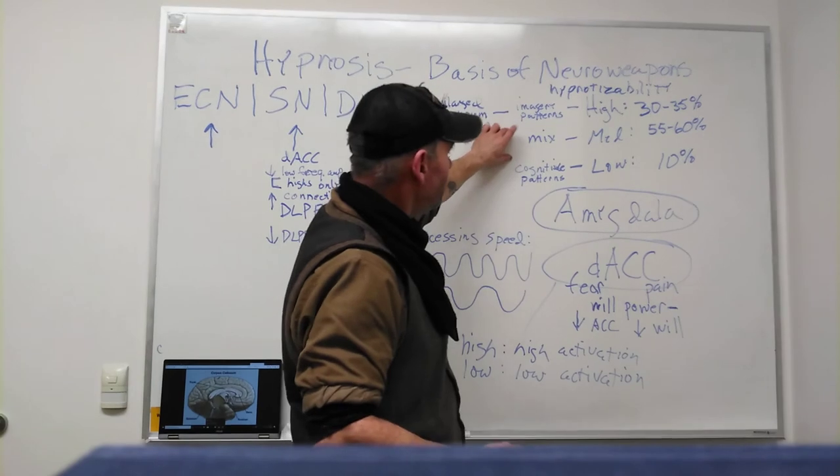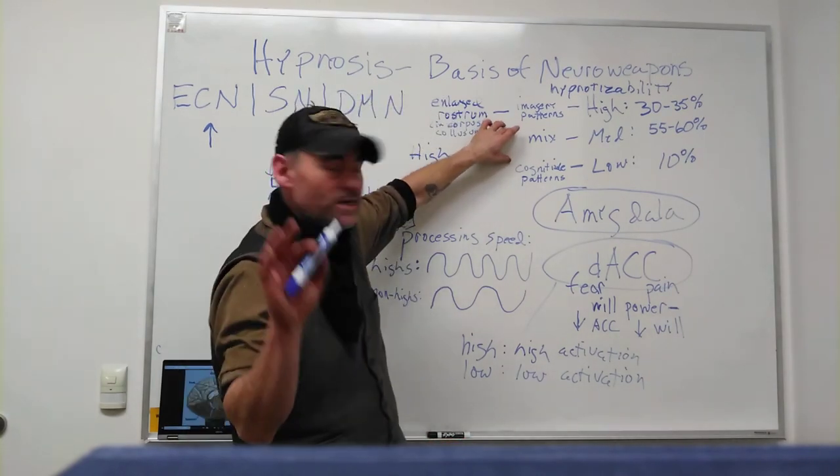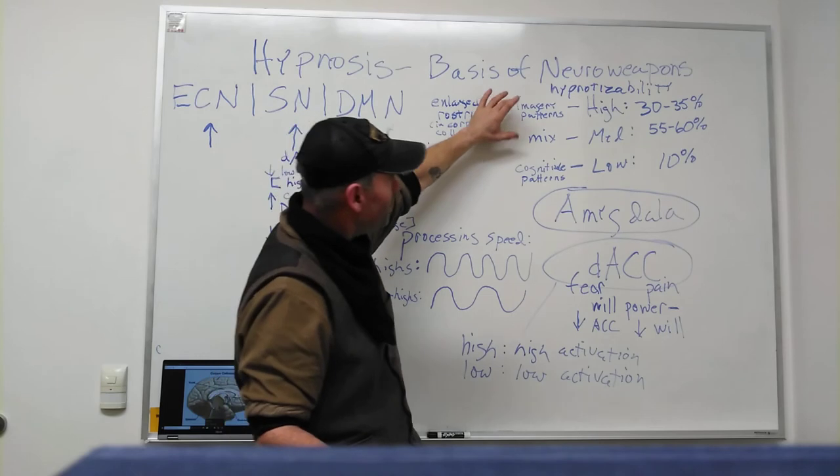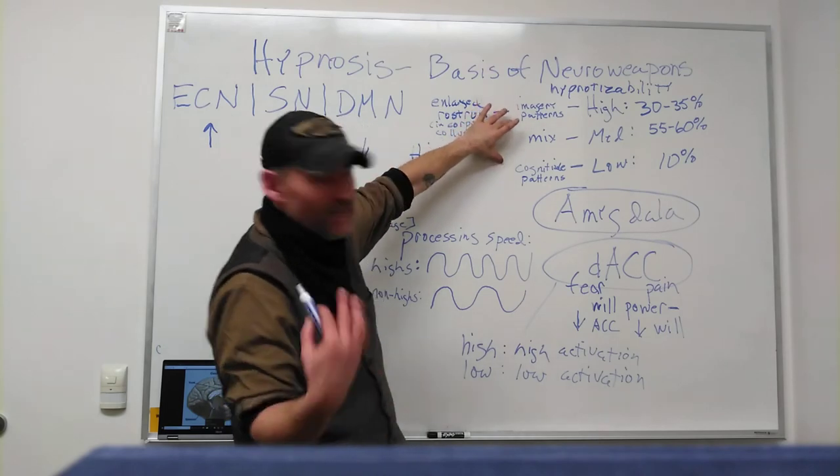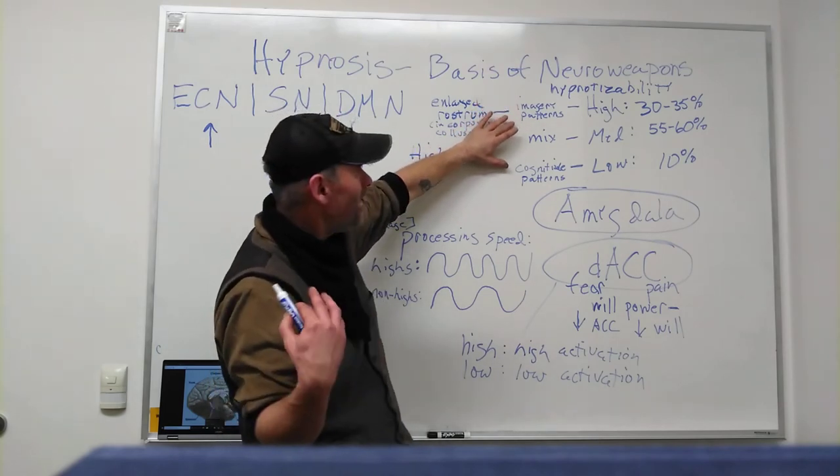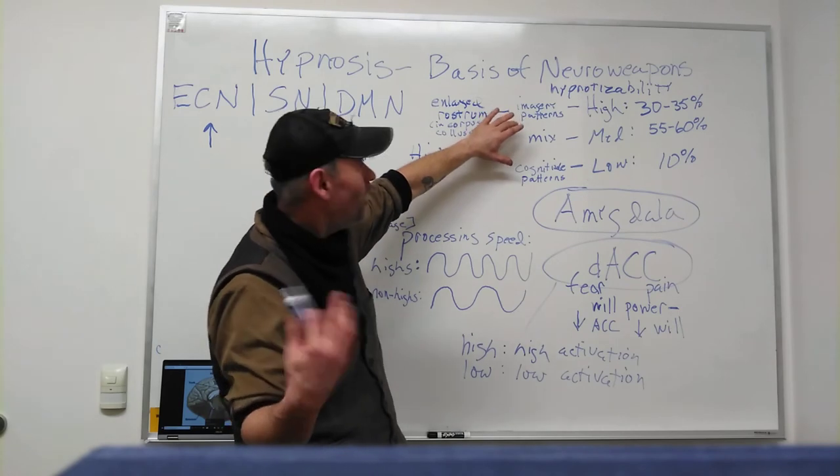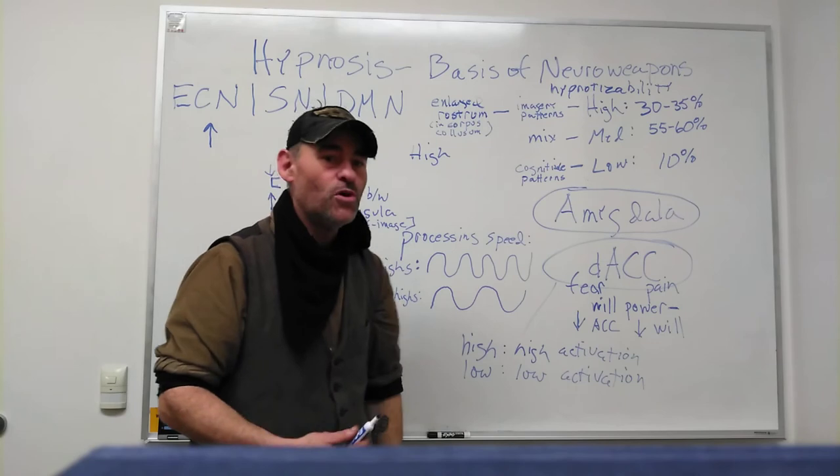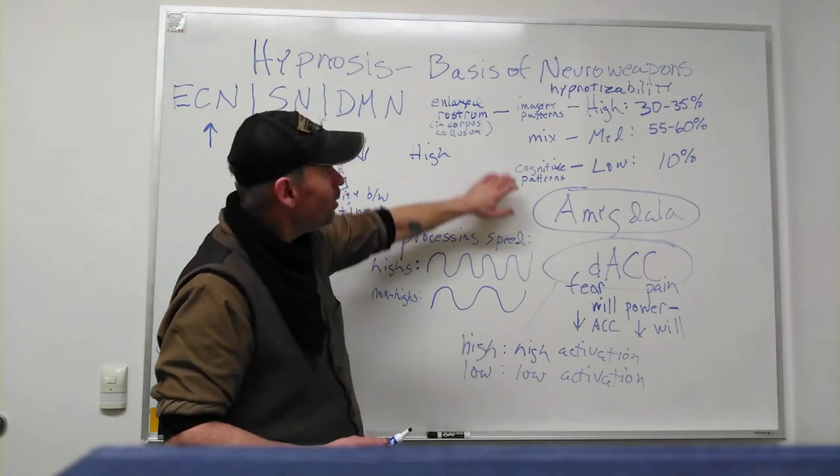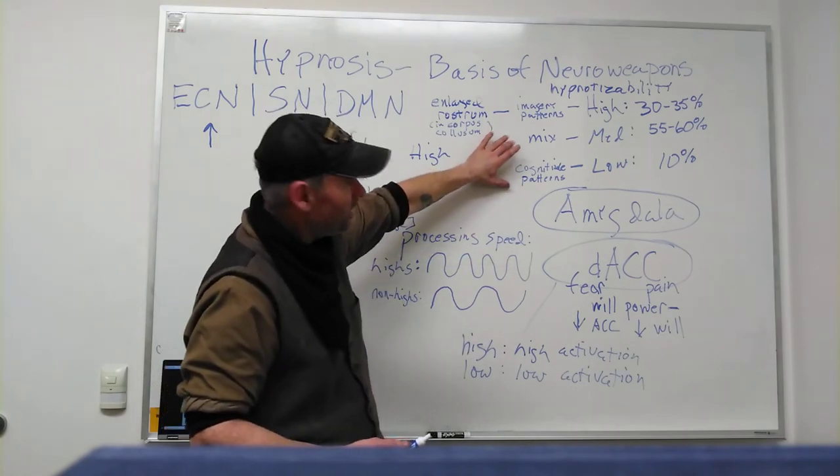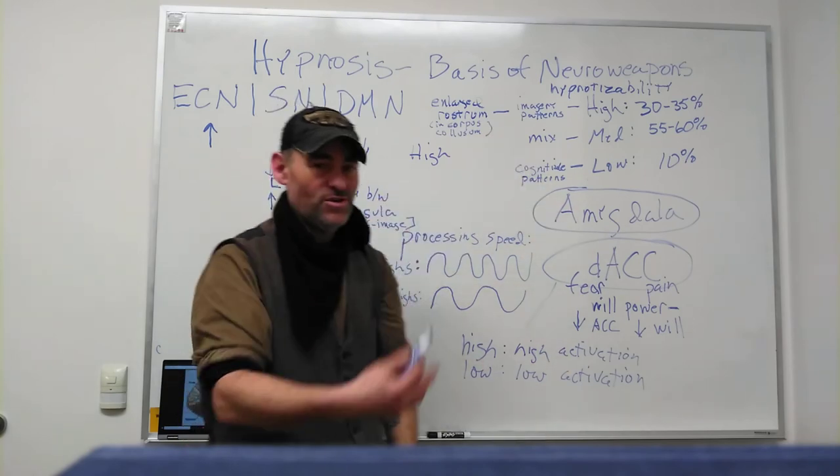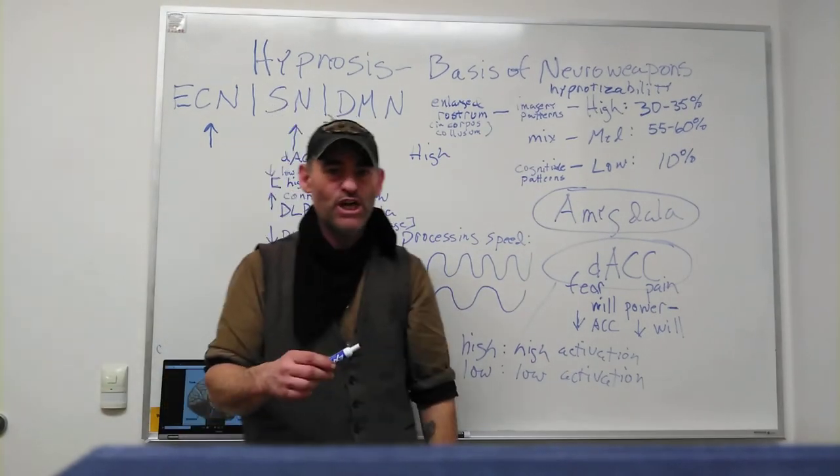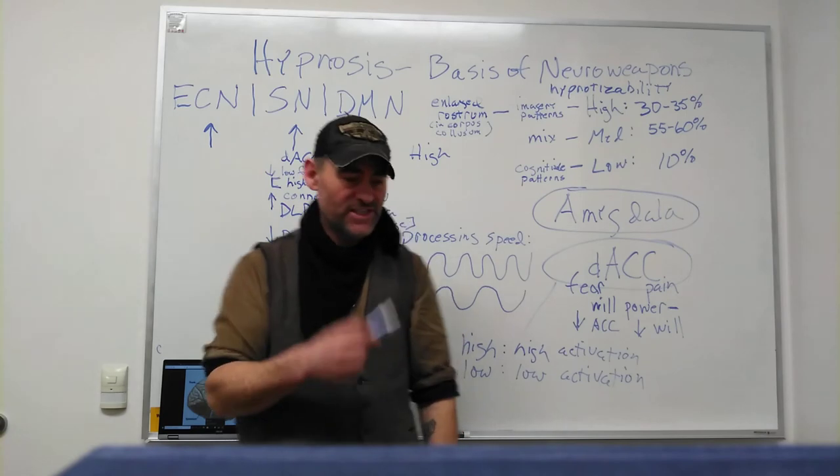Some other differences between highly hypnotizables and the rest of us is that a highly hypnotizable person's brain patterns are more imaginative. They engage the visual cortex more whereas others engage more cognitive patterns. They're thinking more, they're more self-willed in a certain sense. They're not engaging the visual cortex as much.